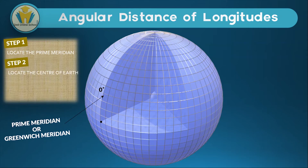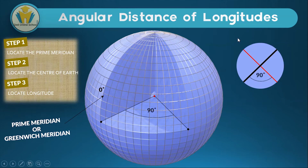Once we have located the prime meridian, our next step is locating the center of the earth, just like we did. And the third step is locating the longitude whose angular distance we want to measure. After that we draw our lines joining these three points and measure the angle in between these two lines — and we are done. We can also use the 2D representation to get a better picture of how this looks from the top view. The black thick line shows the prime meridian while the red line shows the longitude whose angular distance we want to find. So this longitude we've found the angular distance for is 90 degrees east.